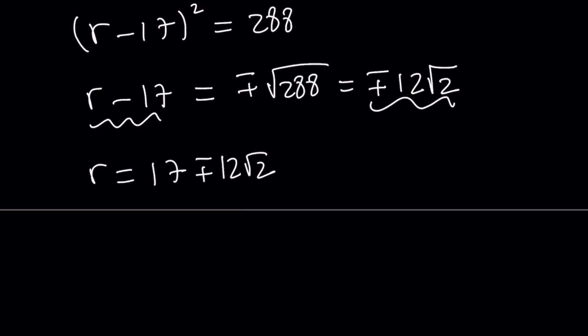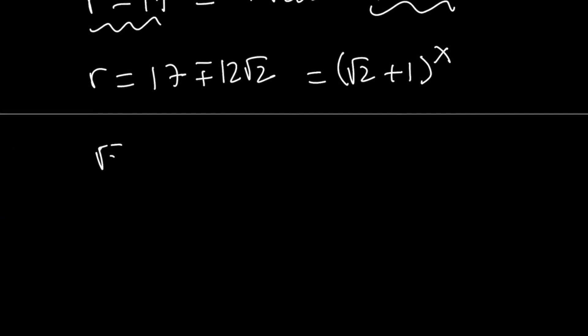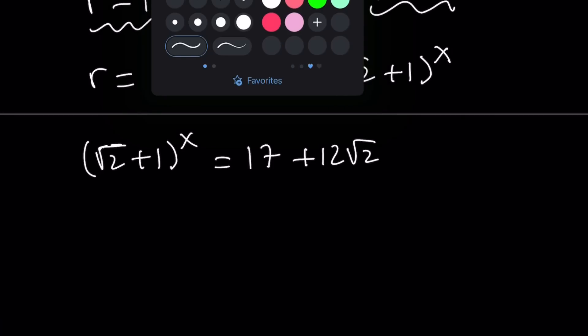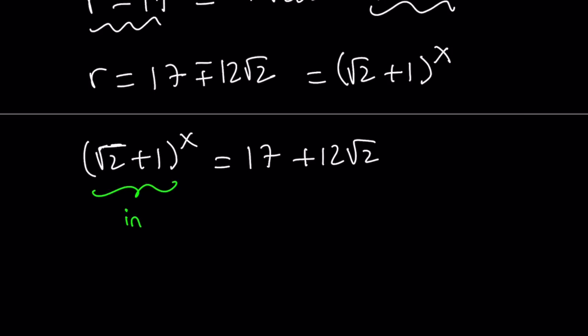So what is r? r is square root of 2 plus 1 to the power x. So we want to raise square root of 2 plus 1 to a power and we want to get these numbers. First of all, here's what we would like to consider. Let me go ahead and start with the positive one first and then we'll take care of the other one. So we'll take a look at this equation. They're both positive, so that's good. And what do you notice about the left-hand side? Square root of 2 plus 1 is actually greater than 1. Therefore, we have an increasing function. This function is increasing all the time. And that is equal to a constant. So there's only one value for which this is true.